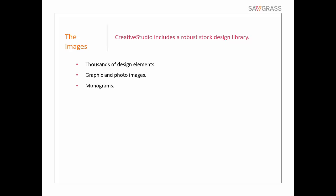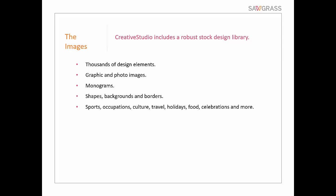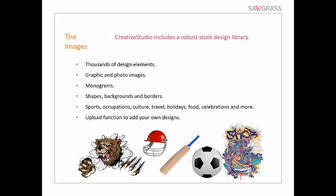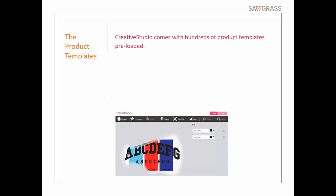It's product-centric: we built it around products. Historically people would create a graphic and then figure out how to put it on the product, but here we ask you what product you want to put it on and then you design based on the actual product. It includes a stock design library with thousands of design elements — graphic and photo images, monograms, shapes, backgrounds and borders, sports, occupation, and lots of different things. You can also upload your own designs — JPEGs and PNGs — though you cannot upload vectors at this time.